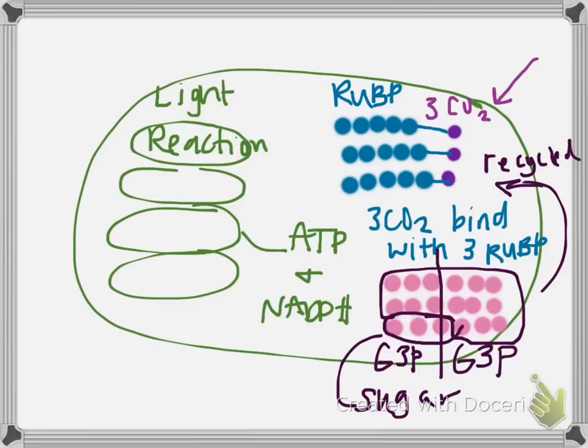This whole Calvin Cycle has to happen twice, because G3P is half of sugar — so it has to happen twice to make a full glucose molecule. I hope that was helpful!